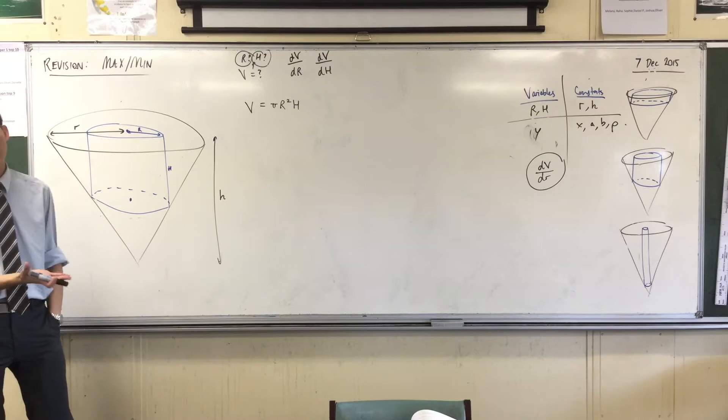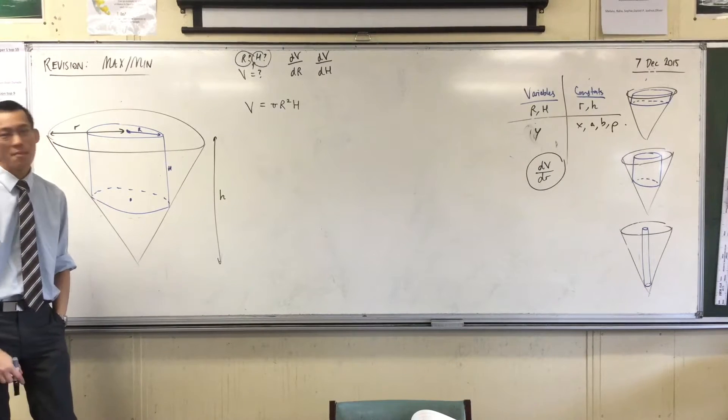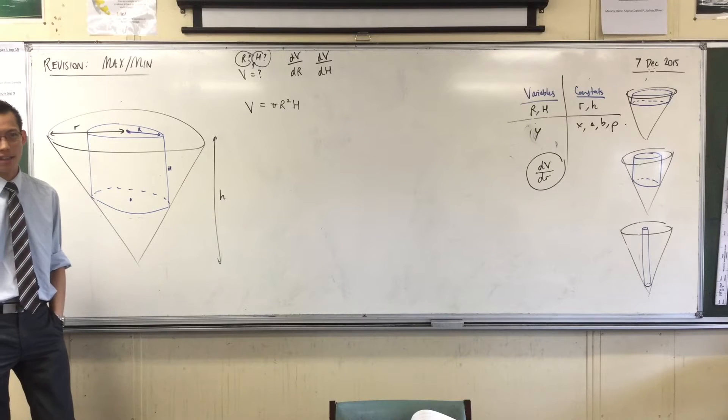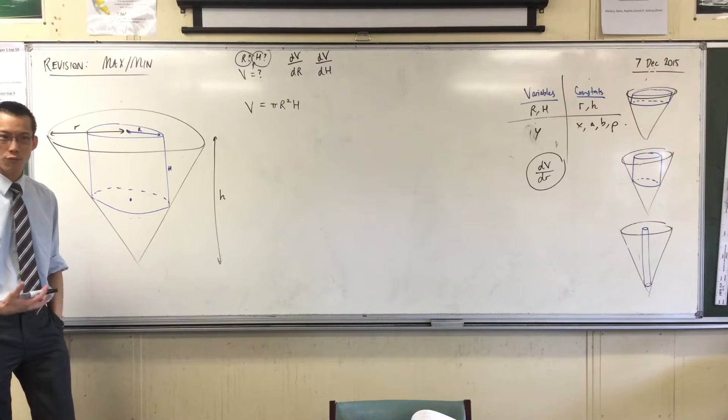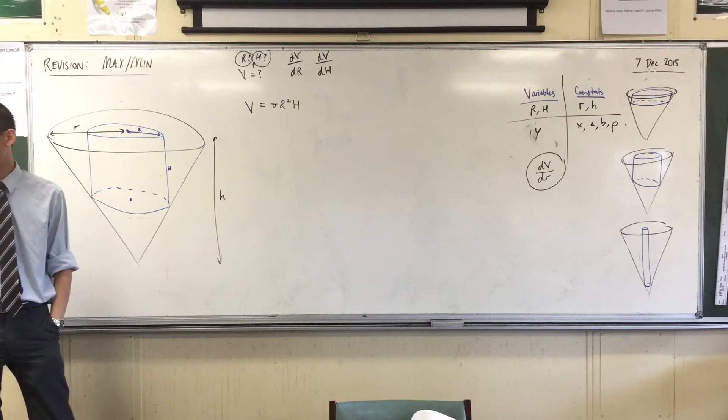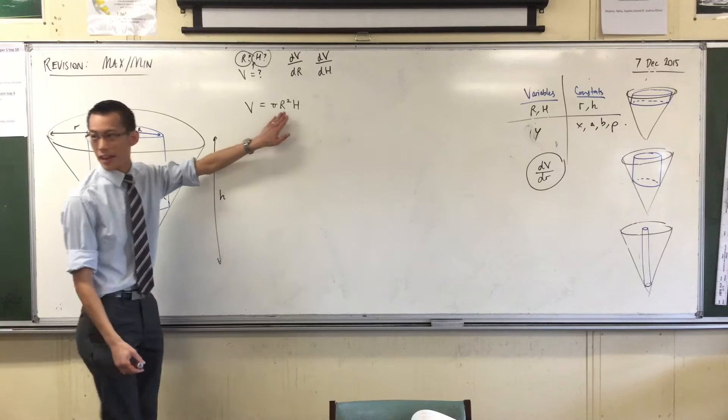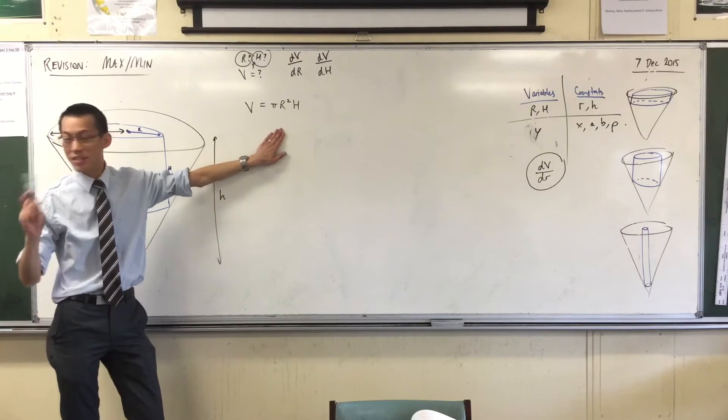Now, I should say, you can choose either. The math will work out just fine. But one is easier than the other. Which would you guess is easier to get rid of? The H is easier to get rid of. The question is, how do I know the H is easier to get rid of than the R? And the answer is, it's not squared.